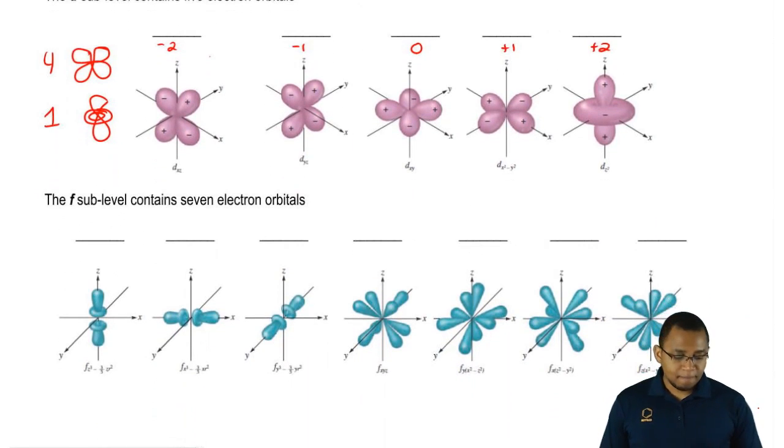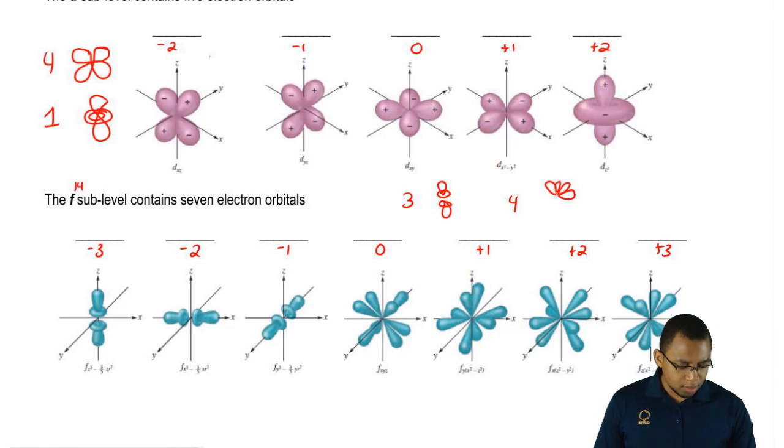For F, F has seven electron orbitals, so it can hold up to fourteen. Each of these has a number to it: negative three, negative two, negative one, zero, plus one, plus two, plus three. The shapes of them are we have three of these types of shapes, and then we have four double four-leaf clovers.